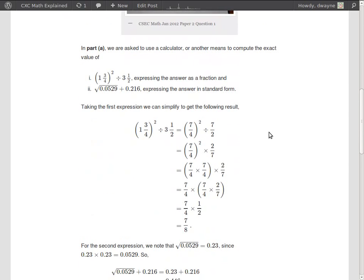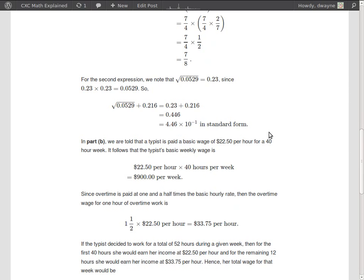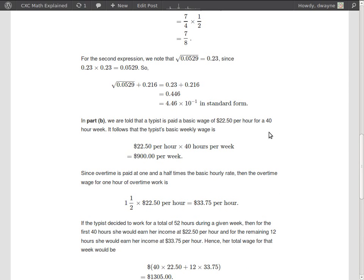So I went ahead and did the calculation, and I'll just explain the steps I took. The first thing I did was to find the square root of 0.0529. You can use trial and error or calculator and you'd get the value 0.23. We can just check that this is indeed the square root by multiplying 0.23 by itself. And when we do that we do get 0.0529. So this is indeed the square root.